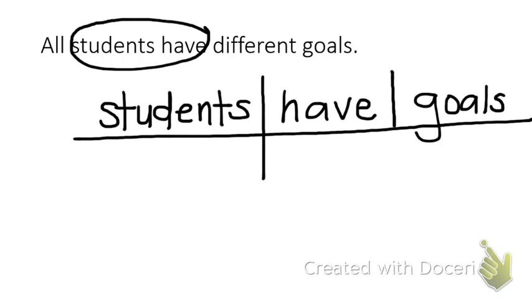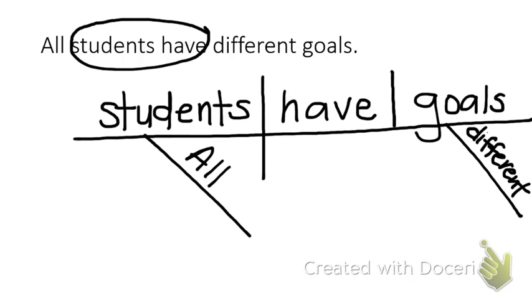Now we can go back and do our modifiers. What kind of goals? Different goals — we'll put that on the line right there. Which students? All students — we'll diagram that on the line right there. Here is the completed diagram.